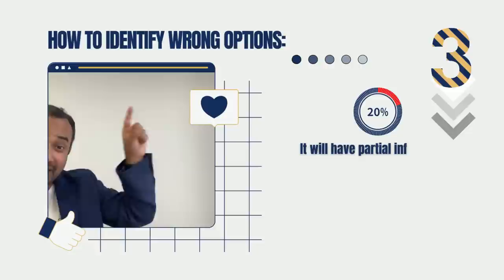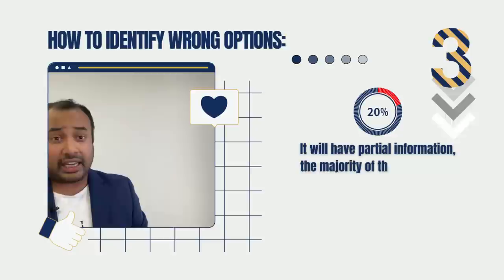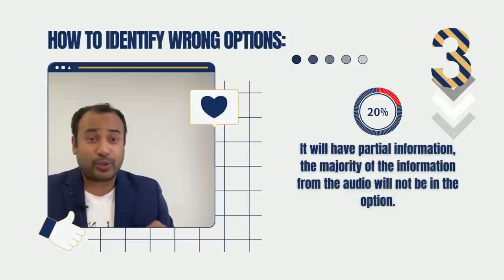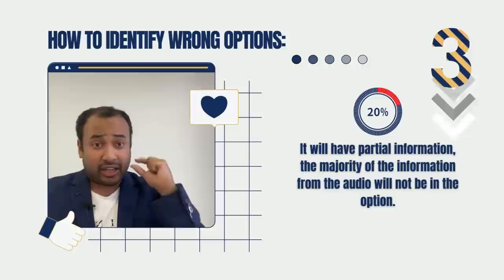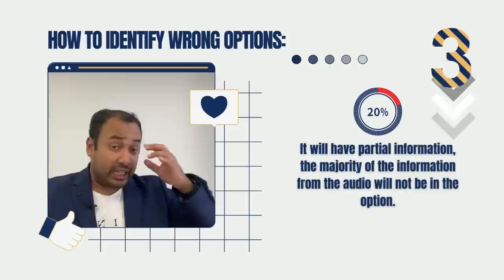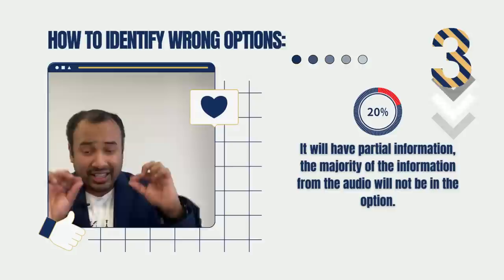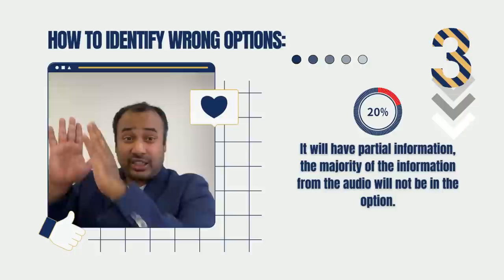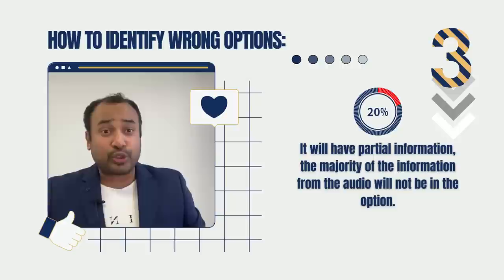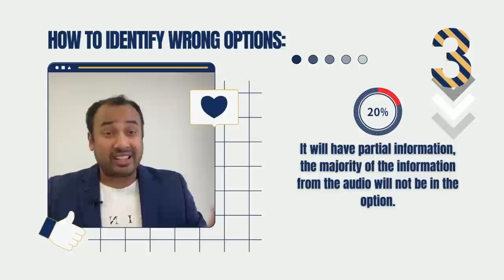Wrong answer type three: partial information. The answer is directly related to the audio, but it only gives you part of the story. For example, it might say 'whales are great mammals' — and that's it, nothing more. The rest of the audio's content is missing. This is called partial information — it's directly related but only covers part of the audio, not the full summary.